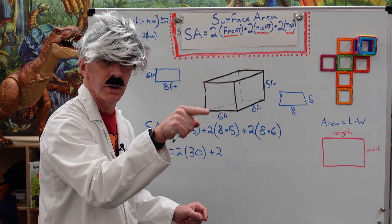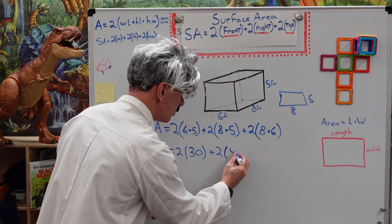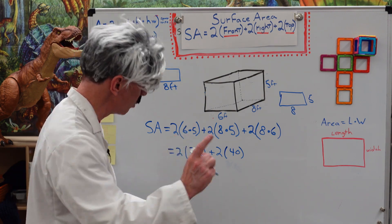8 times 5. 5, 10, 15, 20, 25, 30, 35, 40. Very important. You know your multiplication. I tell that to my son all the time. You need to memorize your multiplication facts all the time.